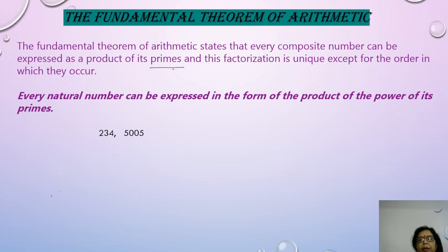Now what are prime numbers? Prime numbers are those numbers which are divisible only by one or by themselves. The lowest prime number is 2, then 3, and these are all prime numbers — it will go up to infinity. You will notice that they are divisible only by themselves or by one.